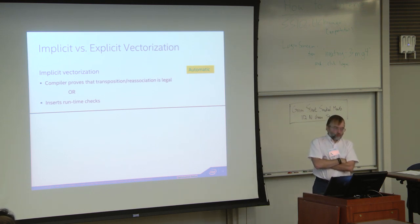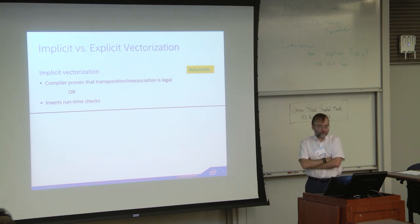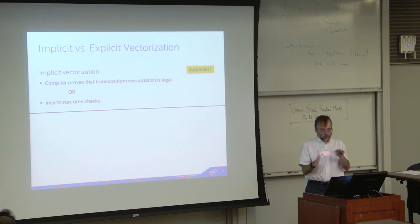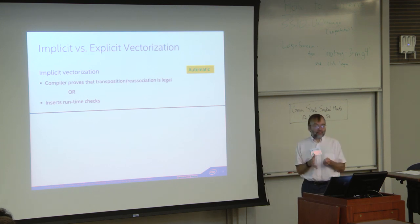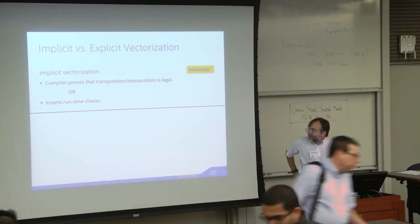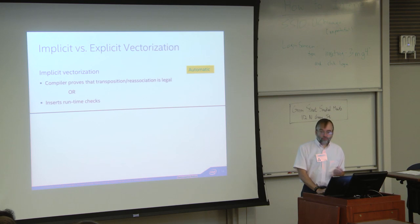Vectorization is a transform, so those two questions — is it legal and is it profitable — have to be asked. There are two forms of vectorization. In implicit vectorization, the compiler answers those questions itself, either proving the transposition is legal, or jamming in runtime checks that check at runtime whether conditions are right. If the runtime check fails, it falls back to the serial code.